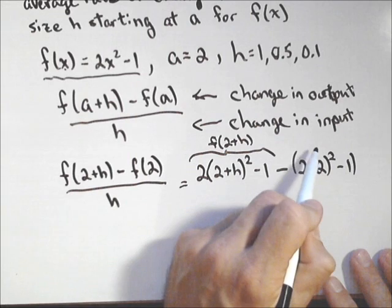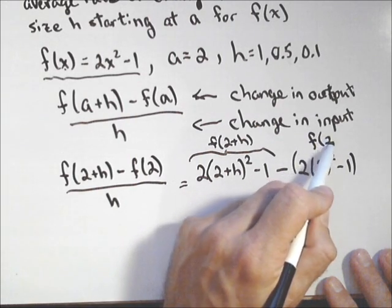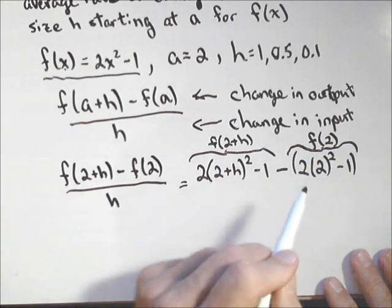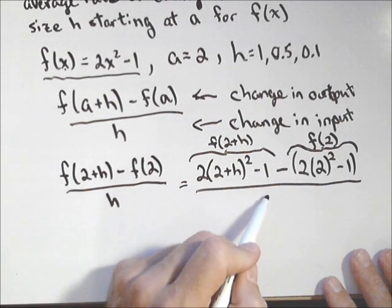And you do always want to put that in parentheses. So, there's my f of 2 right there, all over h.